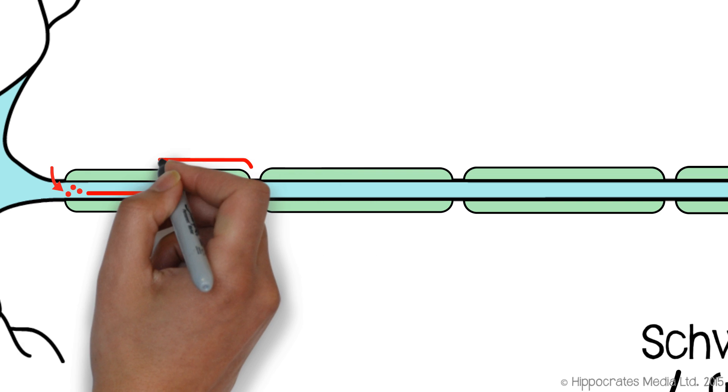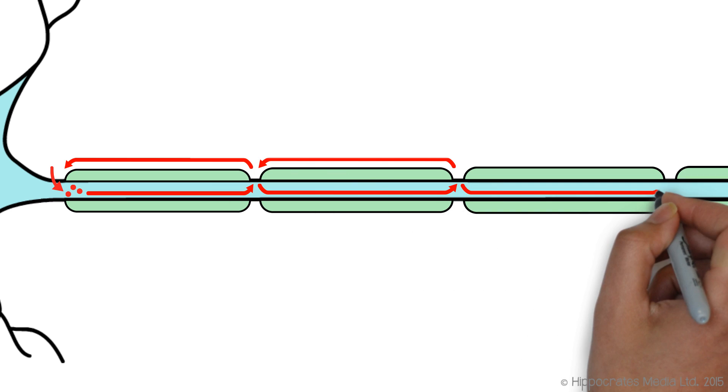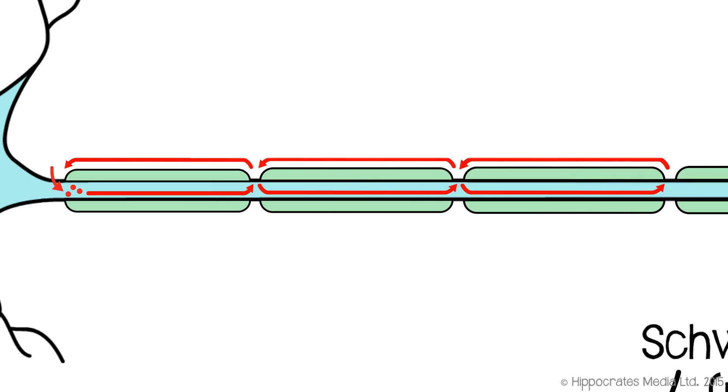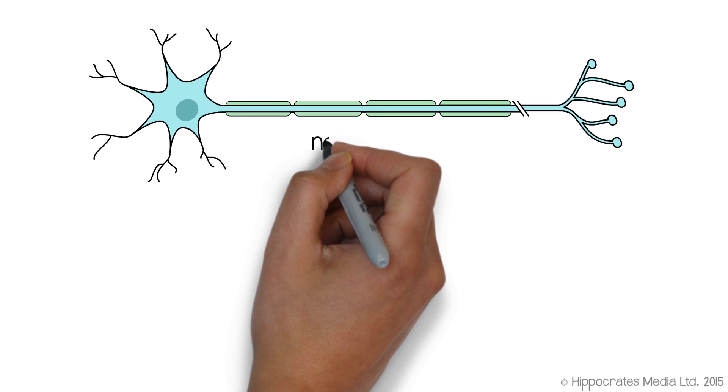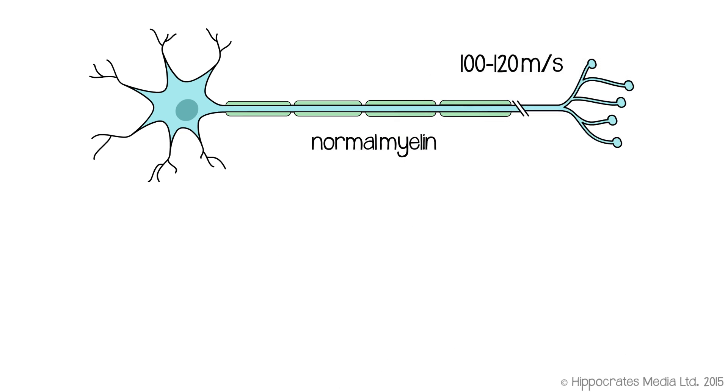The advantage of this is that it speeds up the propagation of your action potential. It speeds it up quite significantly. The way it does this is quite complicated, and if you look in the textbooks, you'll find discussions of what's called length constants and time constants, which allow you to get a more physics-based view of exactly what's going on. I'm not going to go into that at this point. Suffice it to say that myelination will speed up your velocity of action potential propagation to a nice high value. As I said, between 100 and 120 meters per second in our very fastest fibers.